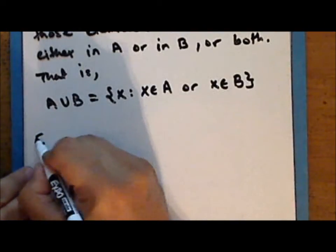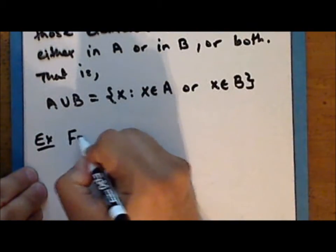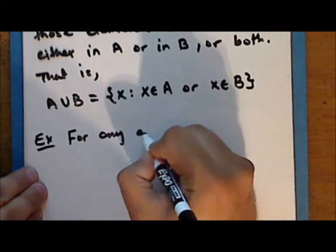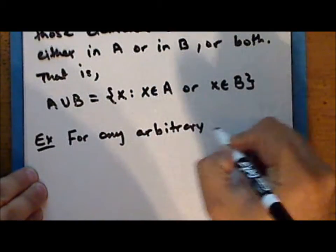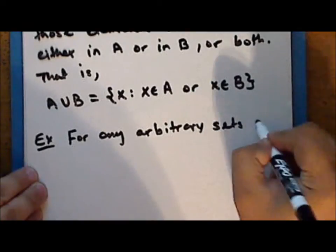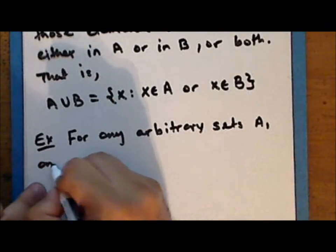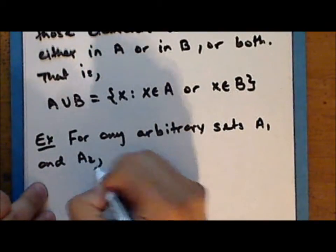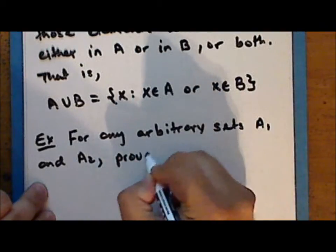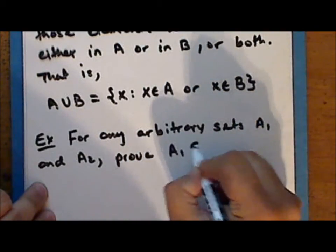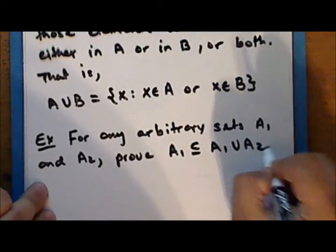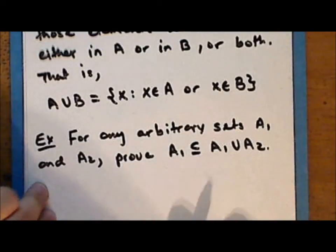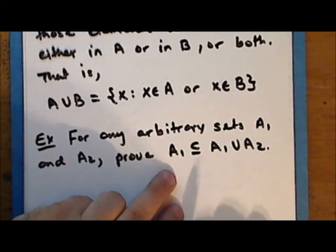As an exercise, for any arbitrary sets A₁ and A₂, prove that A₁ is a subset of the union of A₁ with A₂. That is, show that a given set is a subset of any union which contains it.